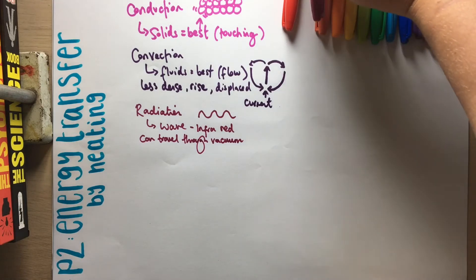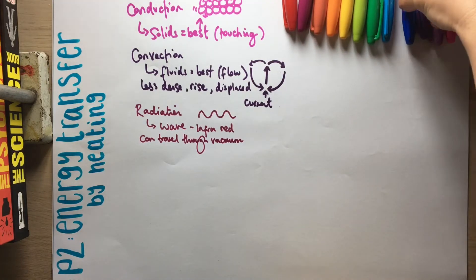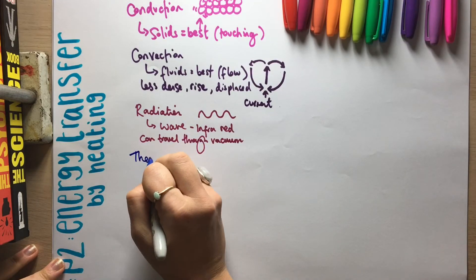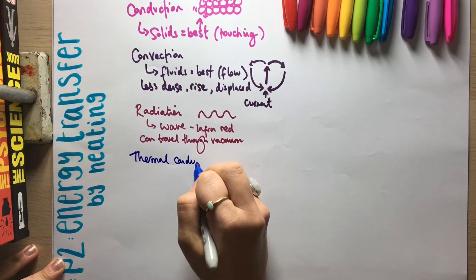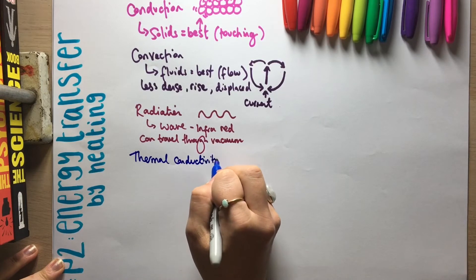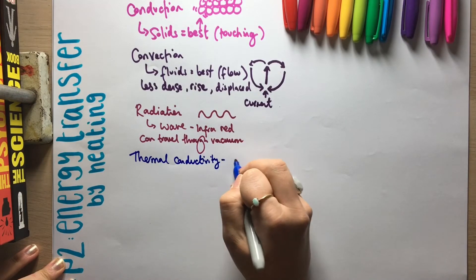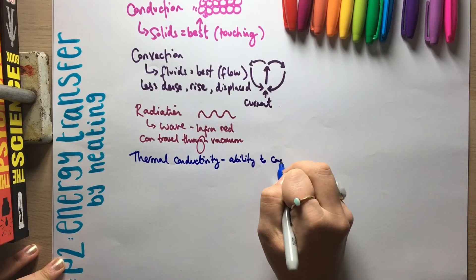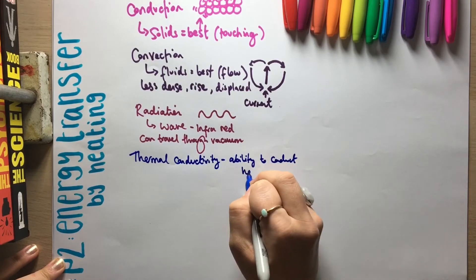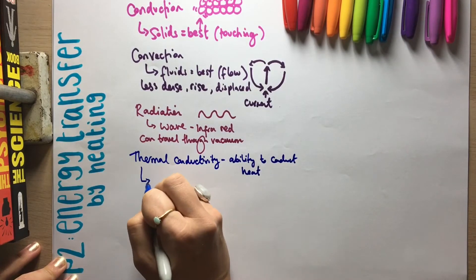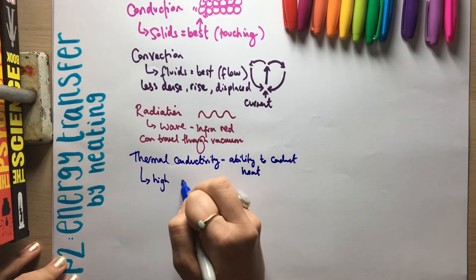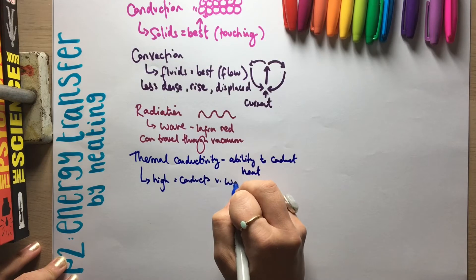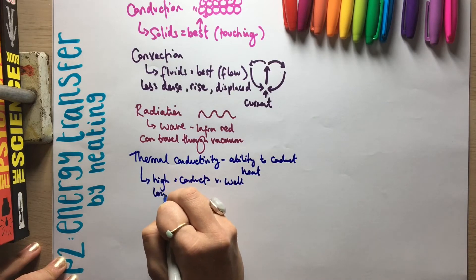So one of the other things that you need to know about in this topic is the idea of thermal conductivity. And this is a property of a material. So it is the ability to conduct heat, a measurement of the ability to conduct heat. So if it has a high thermal conductivity, then that means it conducts very well.